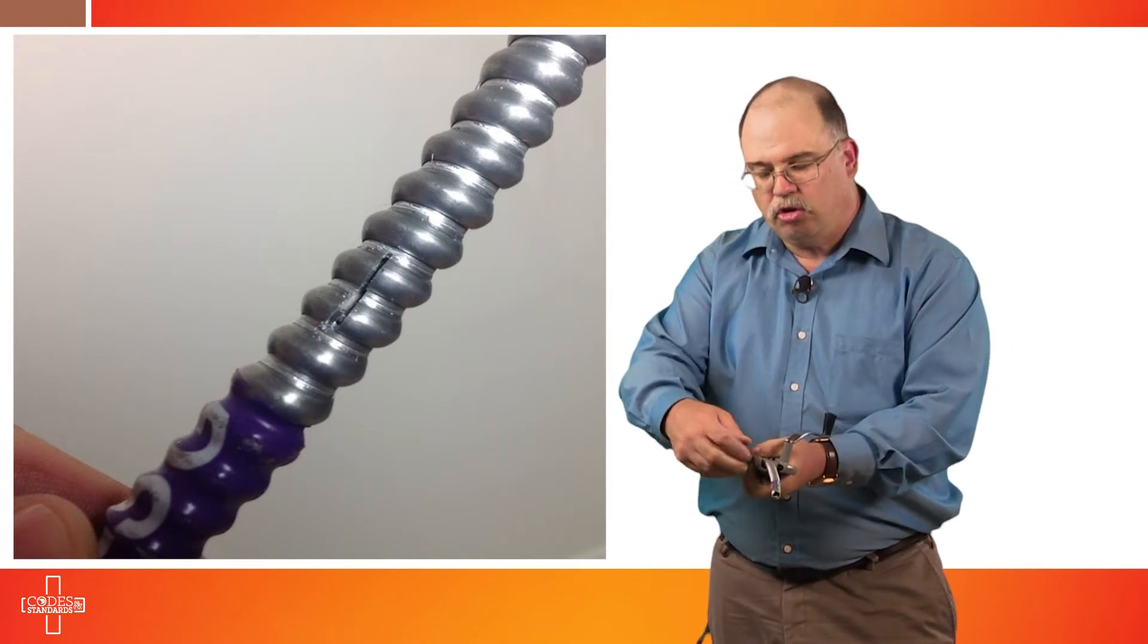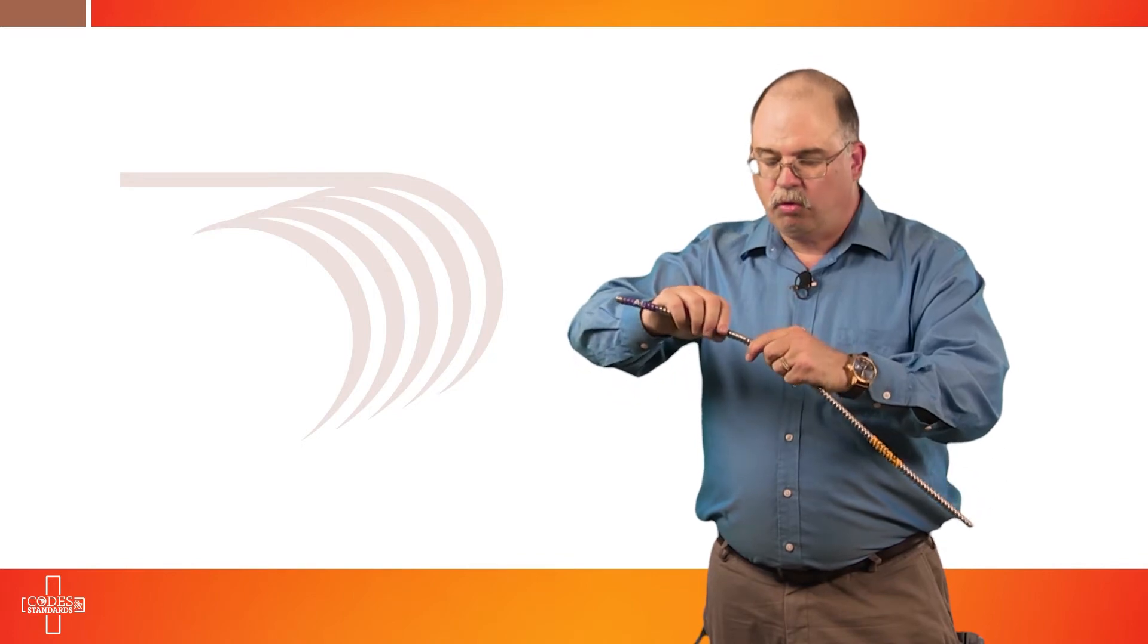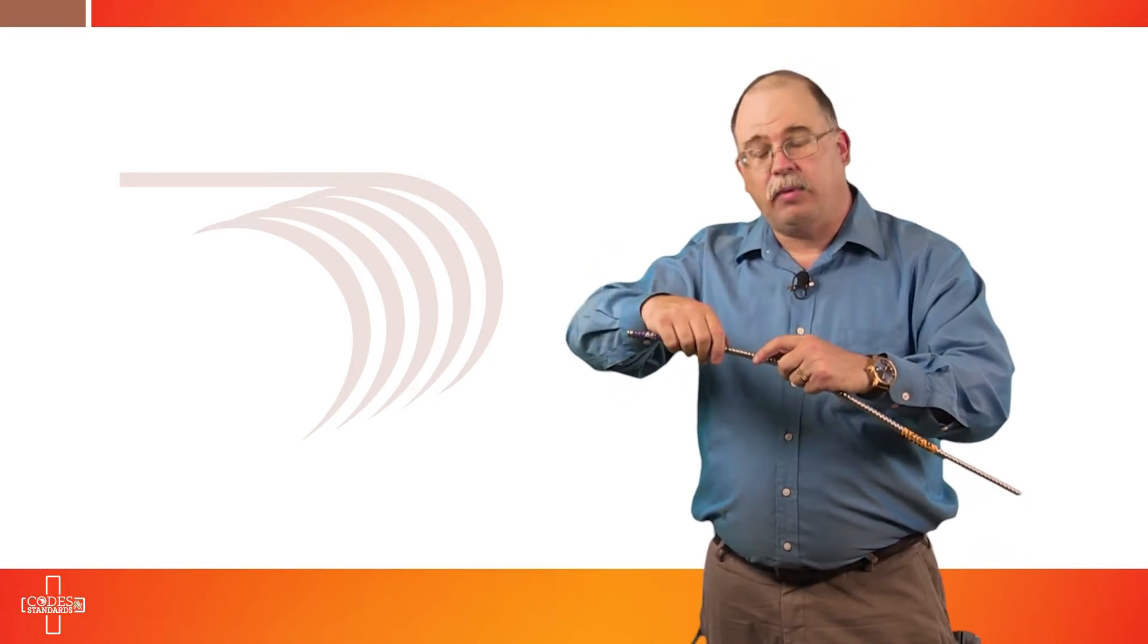At that point, you'll loosen the set screw, pull the Type-MC smart ground product out of the device and you'll notice you have a cut here. You want to twist the metallic sheathing in a counterclockwise way and then slowly remove the metallic sheathing from the cable.